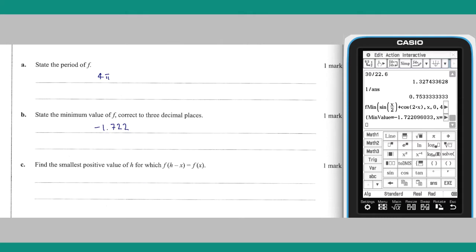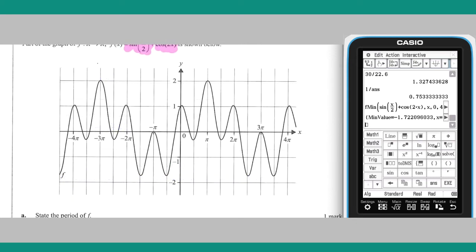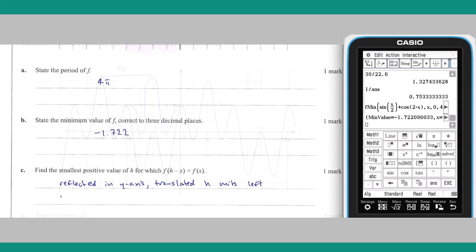Part C and Part D: F of h take x represents a transformation of f, such that it is reflected in the y-axis and translated h units left. Based on this thinking, the smallest value of h is 2π.